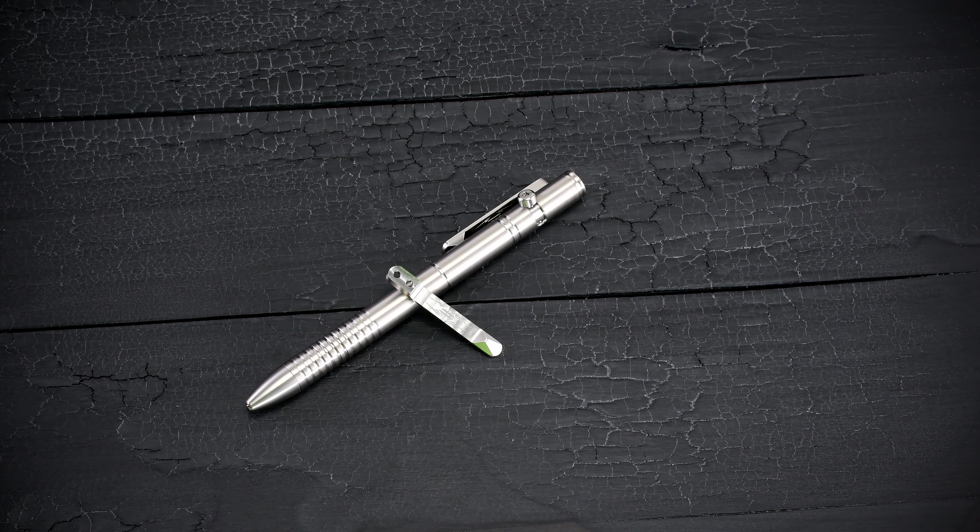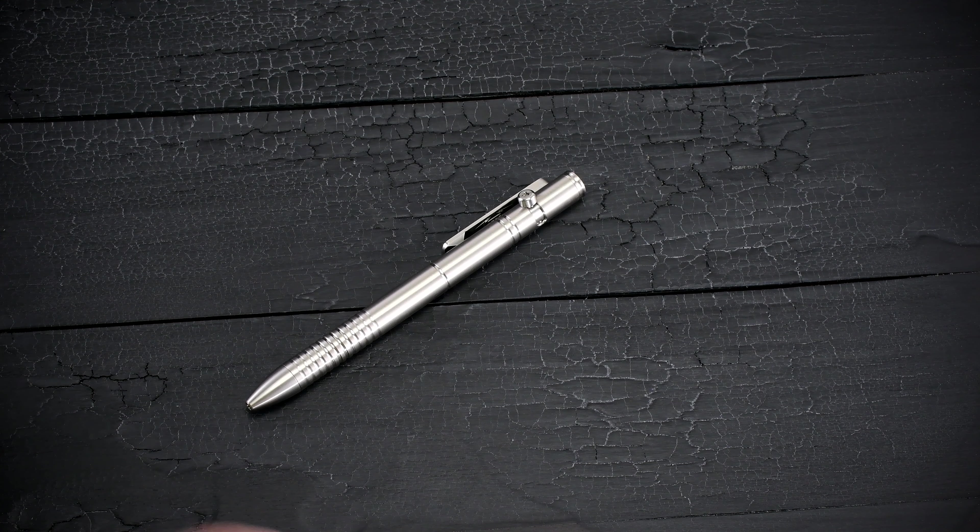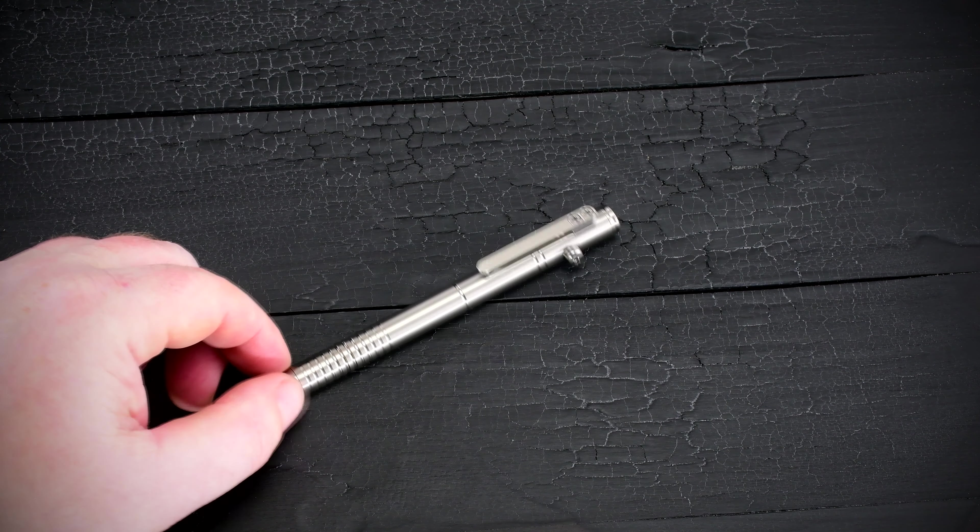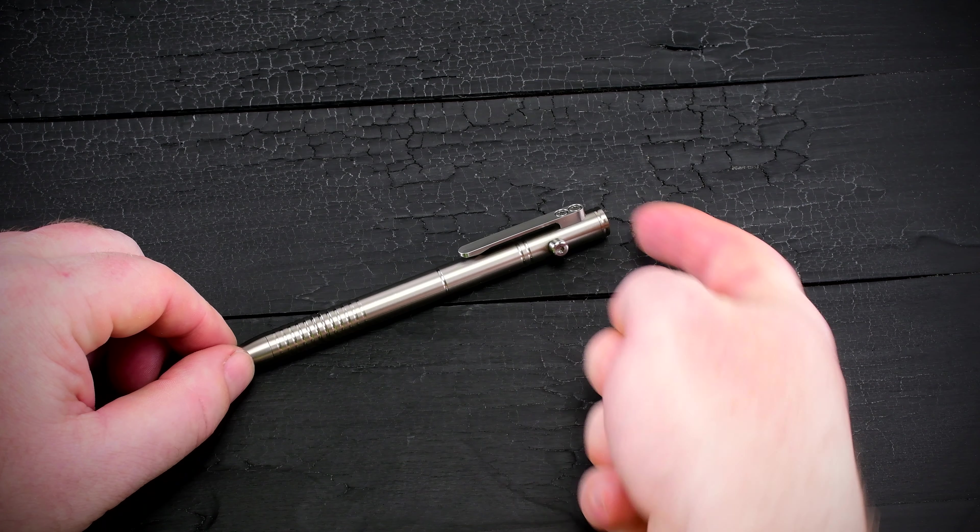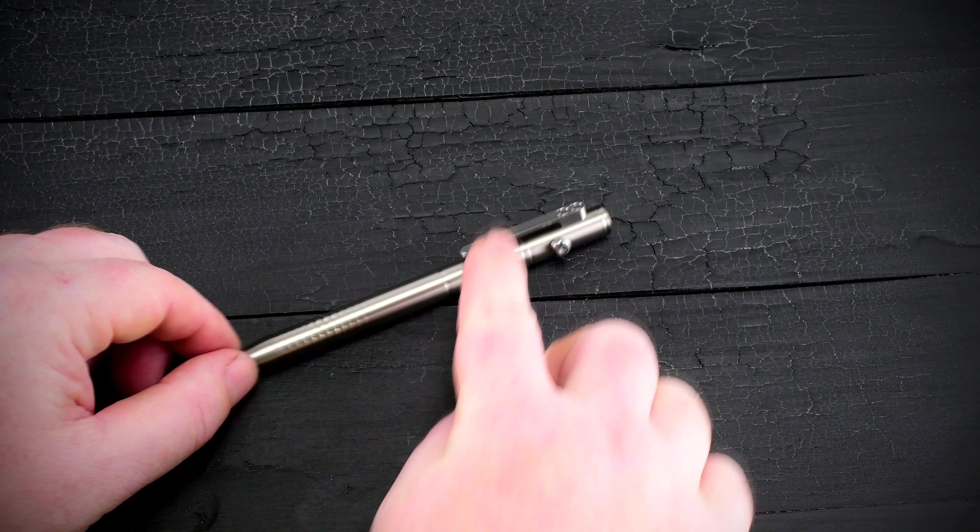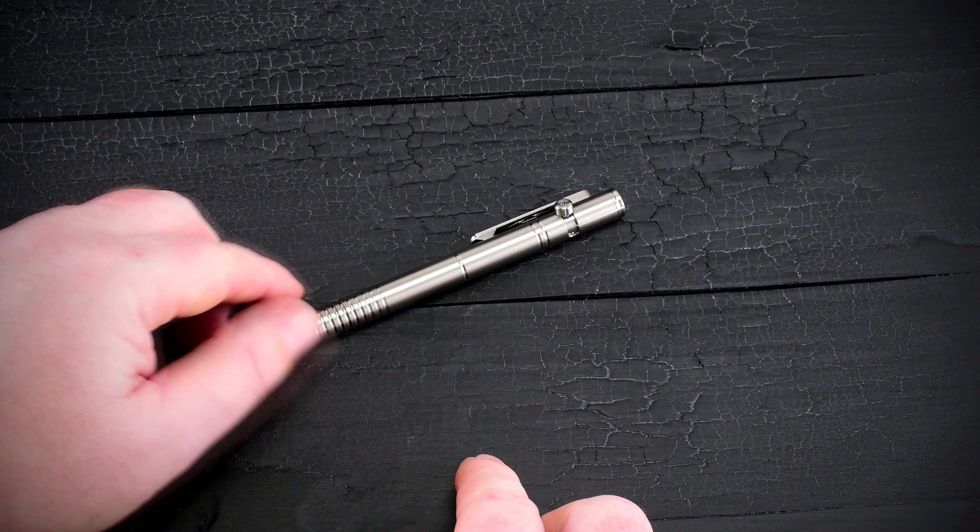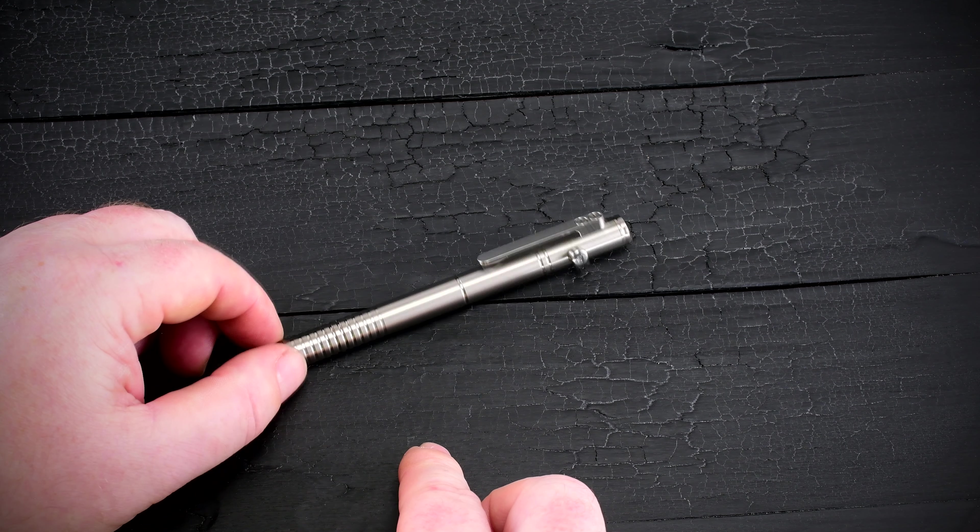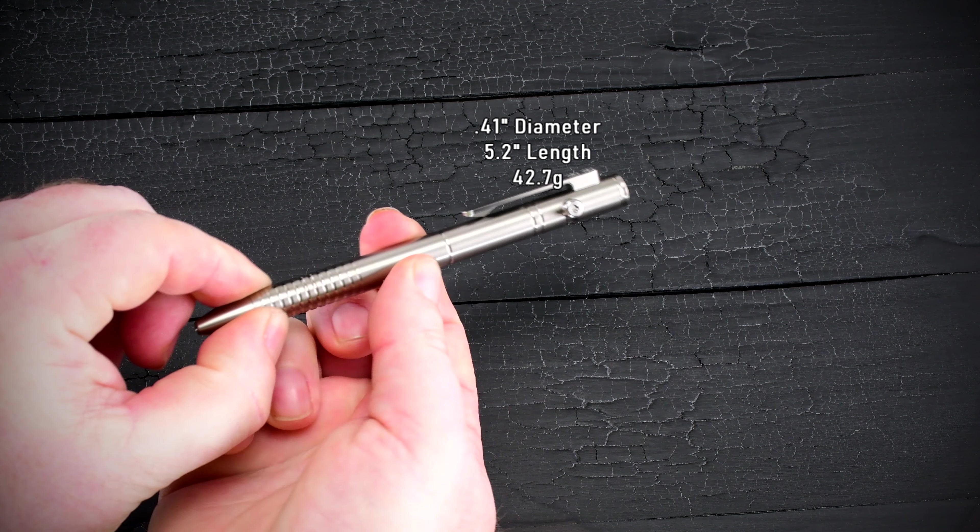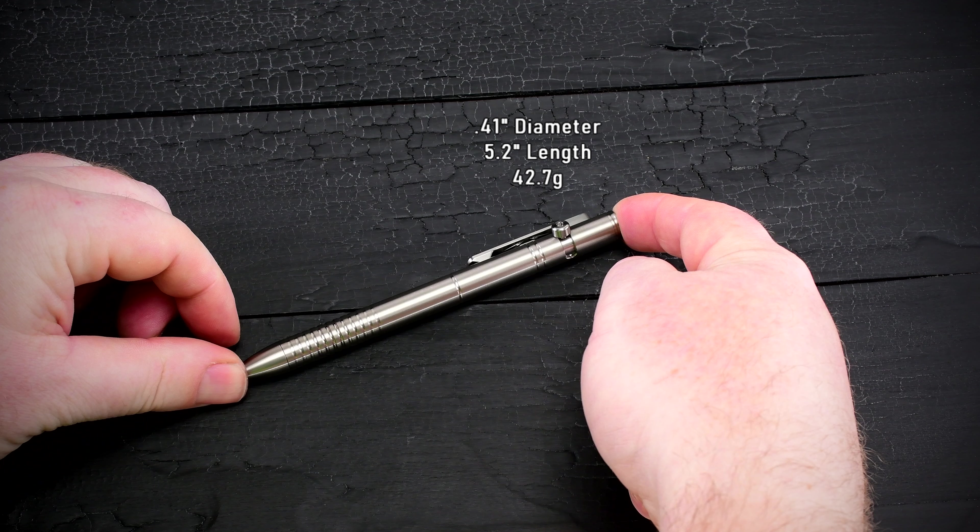So let's talk about the Cam Pen. First, I'll give you a little tour of what this guy looks like. We have a titanium end cap, a titanium barrel, titanium actuator, stainless steel clip, titanium nose cap. Yeah, looks really nice. 0.410 inches in diameter here, 5.2 inches in length, and just under 43 grams.